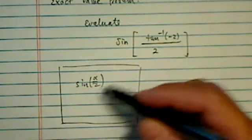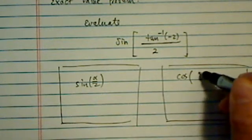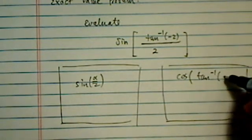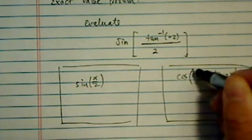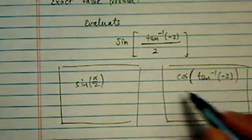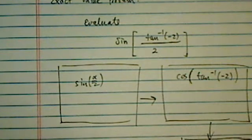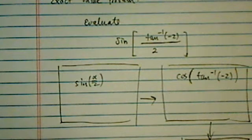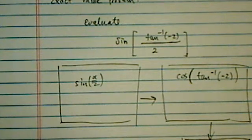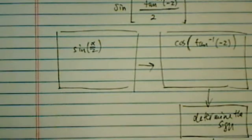First thing we need to do is find sine of α over 2. This one is pretty interesting to do. Once we find that, we need to find cosine of tangent inverse of minus 2. We'll see in a minute why it becomes a cosine. And from there, then we need to figure out how to determine the sine, and then we'll get the answer. This is actually a pretty involved question here, so let's do one step at a time.